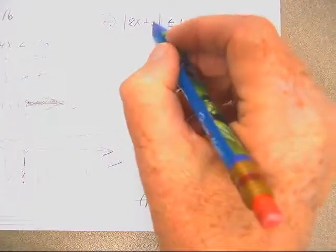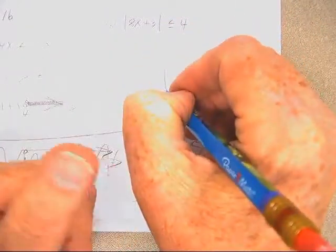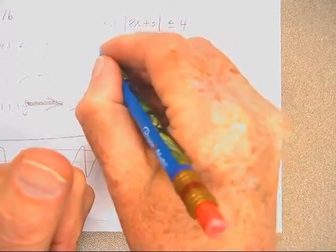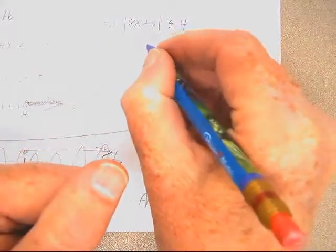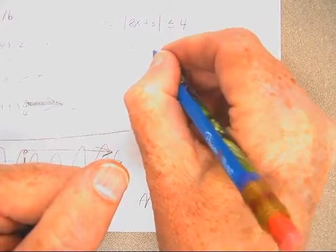Welcome back. If you're listening out there on Radio Land, we've got another absolute value. I want to draw a line. How about the absolute value of 8x plus 3 is less than or equal to 4.